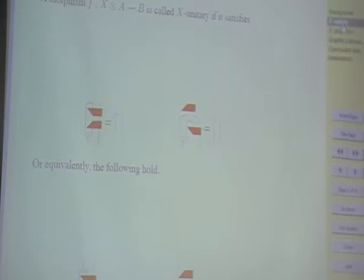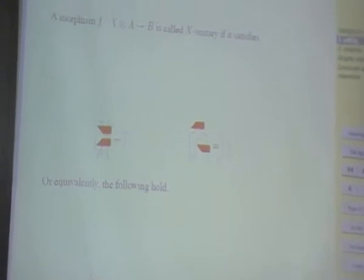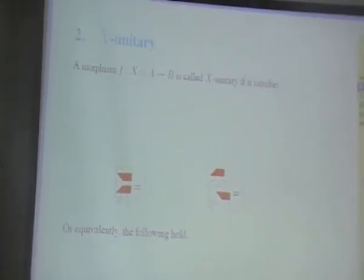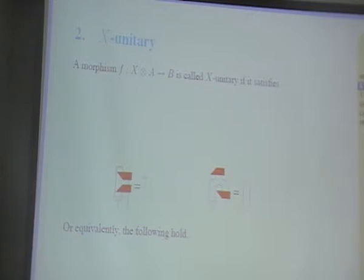To reduce the picture of BB84 without eavesdropping, we use the property of X unitary. This was given in Coecke's paper. By the property of X unitary, we got the reduction picture of BB84.